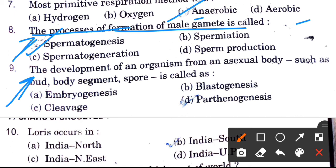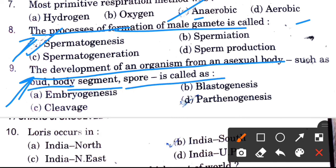Next question: Development of an organism from an asexual body such as a bud, body segment, and spore is called. Options are embryogenesis, blastogenesis, cleavage, and parthenogenesis. The answer is parthenogenesis.